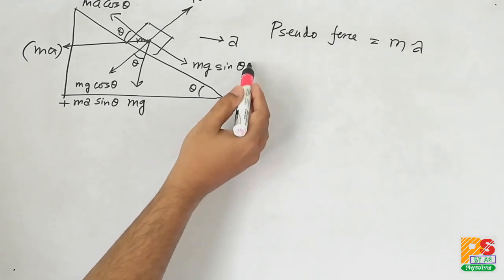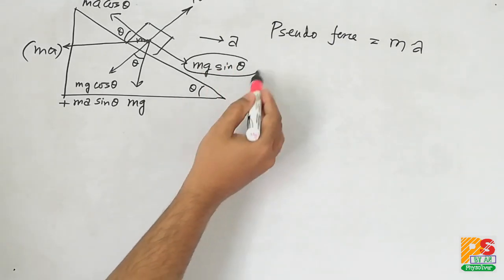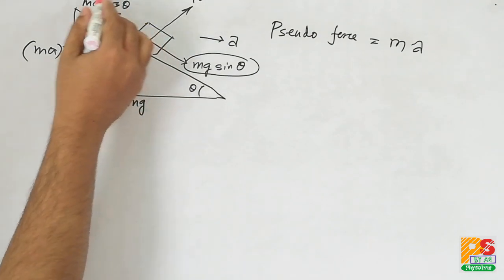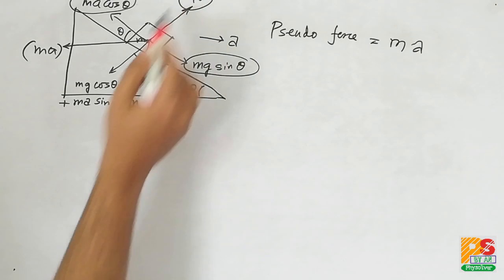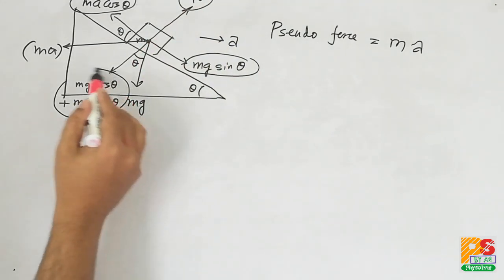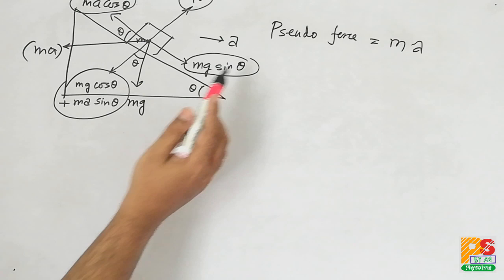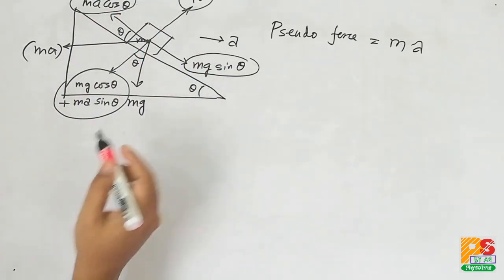Now it is clear since the body is stationary on the wedge, so we can equate mg sin theta and ma cos theta, and we can also say that n is equal to mg cos theta plus ma sin theta.